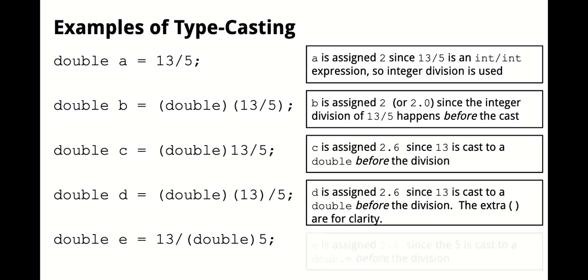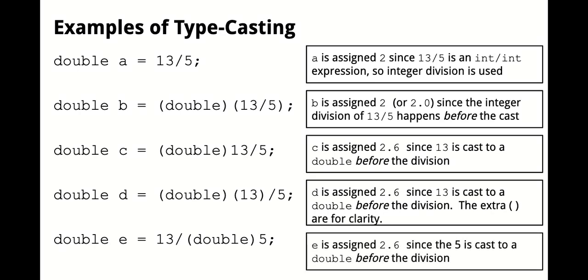And the last one, in line with these other ones, c, d, and e, the 5 is cast to a double, treated as 5.0, and that would also assign e to be 2.6. So just be mindful of your use of parentheses and the expressions where you're going to be casting, especially the difference between b compared to c, d, and e here.